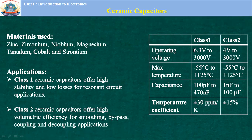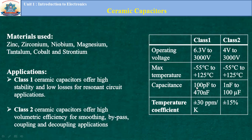Let us see some specifications for both class one and class two ceramic capacitors. The operating voltage for class one is 6.3 V to 3000 V. For class two, the minimum voltage is 4 V to a maximum of 3000 V. Maximum temperature both classes can withstand is minus 55°C to plus 140°C. Capacitance range for class one is 100 pF to 470 nF, and for class two it is 1 nF to 1000 µF. Temperature coefficient for class one is ±30 ppm/K, and for class two it is ±15% per Kelvin.